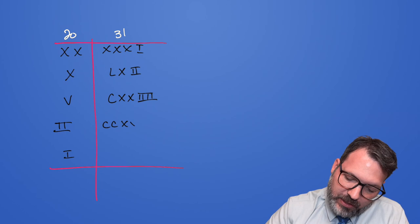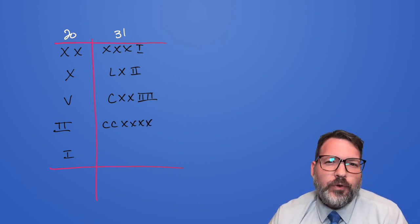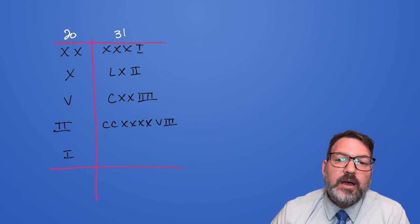Doubling up again, we have C, C, X, X, X, X - four X's, and then those four I's turn into eight. But eight would be represented by a V, that's five, plus another three.